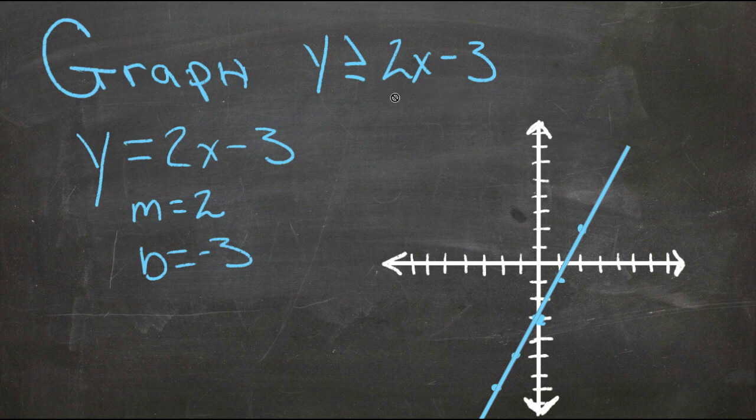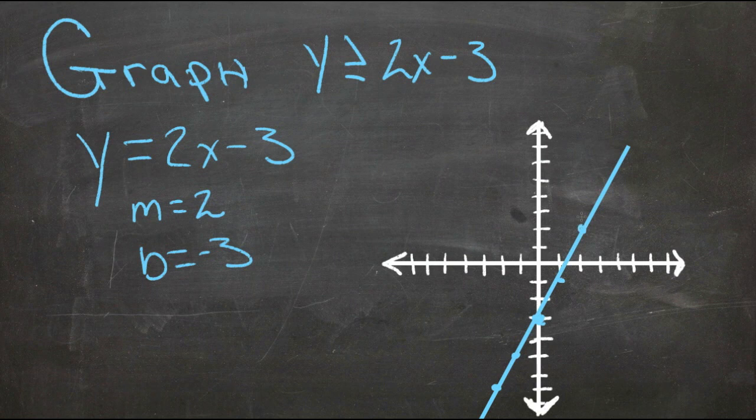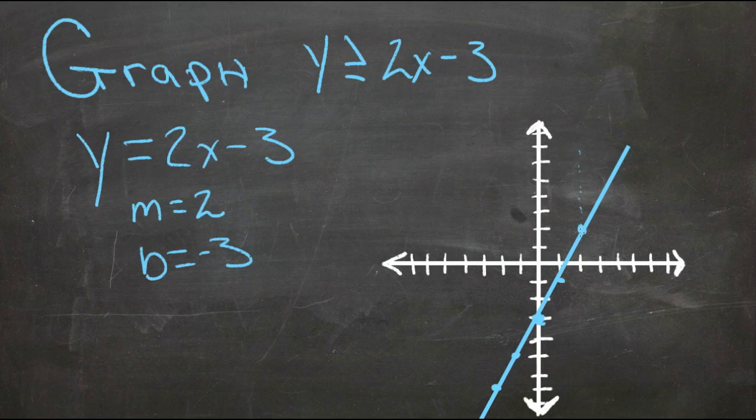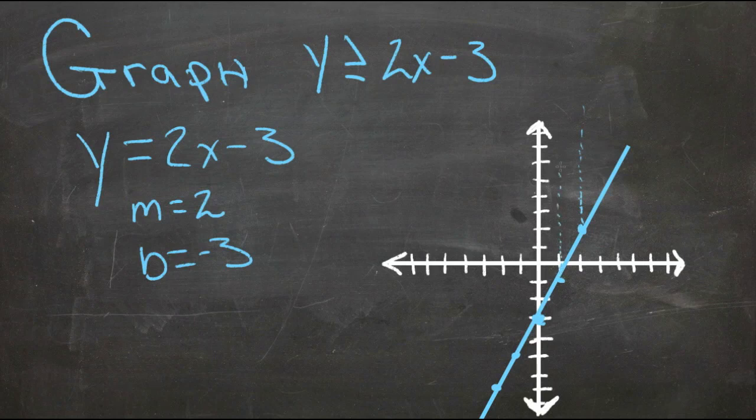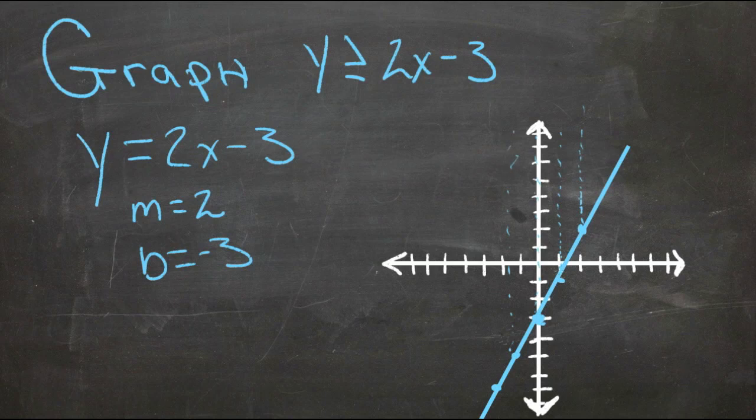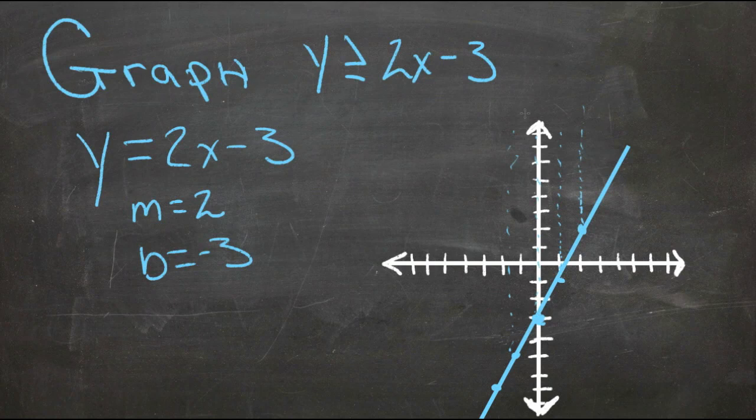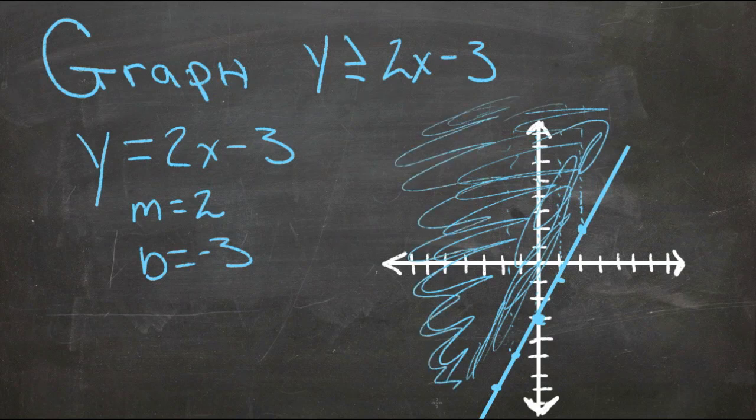Then the only difference here is that y is greater than or equal to that, so y can either be any one of these points or it could be something bigger than that point at that same location. For instance, here y can either be 2, or it could be 3 or 4 or 5 or anything bigger. Here y can be negative 1, or it can be 0 or 1 or 2 or anything bigger. Anywhere along the way, we really have a point and then we have all the values above it. So we need to do is graph the line y equals 2x minus 3, and then we shade everything above or to the left of that line to show that all these other numbers are included in that inequality.